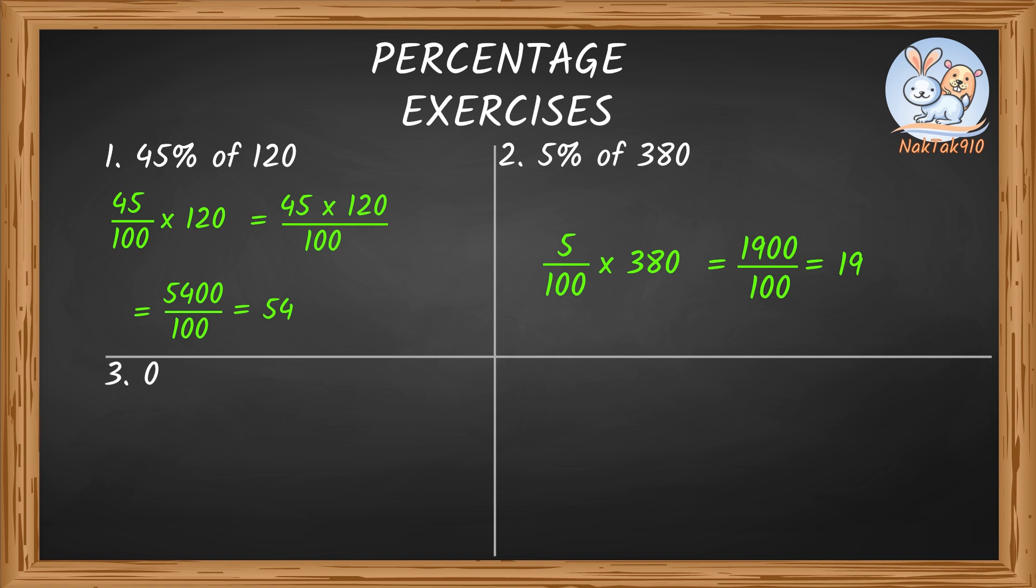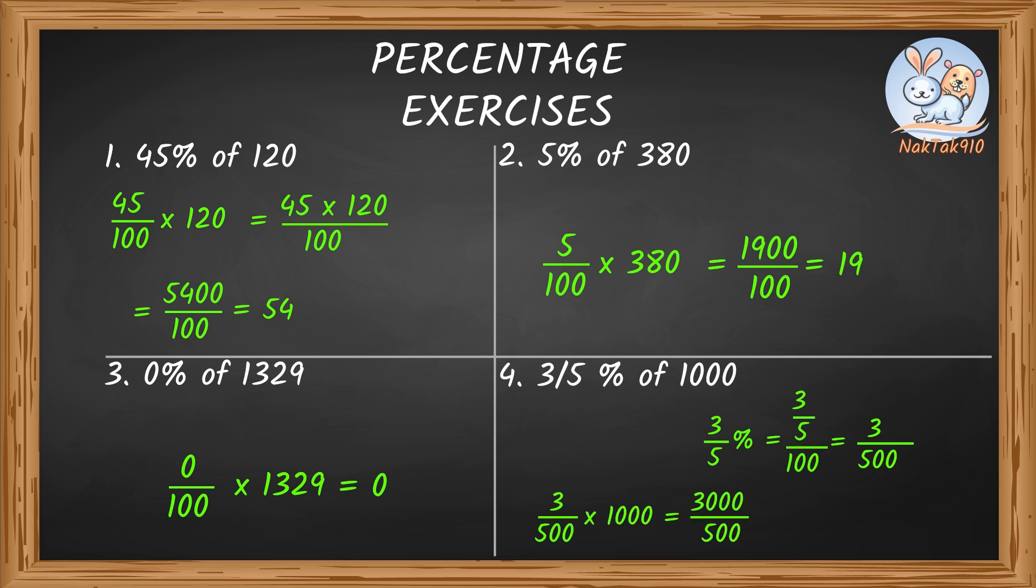Next, let's solve 0% of 1,329. 0% of 1,329 can be written as 0 by 100 times 1,329, which is nothing but 0. 3 by 500 times 1,000 gives us 3,000 by 500, which is 6. Good job. Now, let's move on to another concept in percentages.